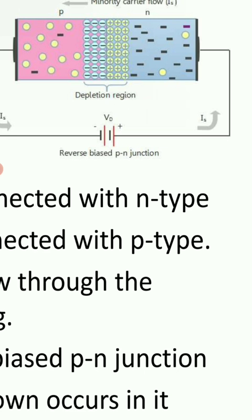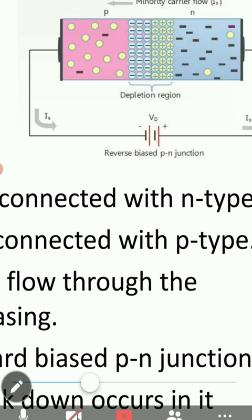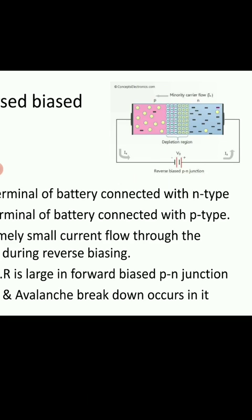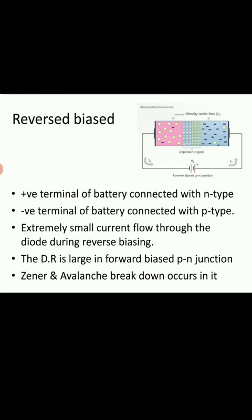Due to which, the width of the depletion region will increase. The depletion region is growing. Because there is attraction between the holes of P-type semiconductor and the negative terminal of a battery. And there is attraction between the negative charge electrons from N-type semiconductor and the positive terminal of a battery. Due to which, the width of the depletion region will go to increase.